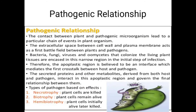Pathogenic relationship میں: the contact between plant and pathogenic microorganism leads to a particular chain of events in the plant organism. The extracellular space between cell wall and plasma membrane acts as a first battlefield between plant and pathogen۔ پہلی جنگ plasma membrane کی سطح پر ہوتی ہے۔